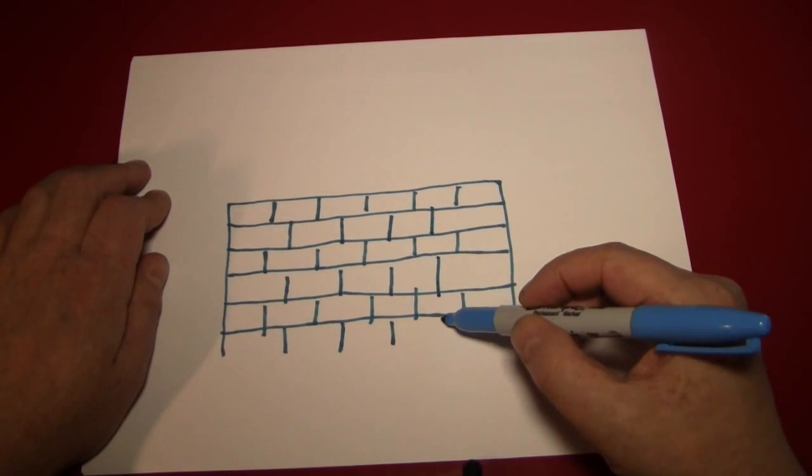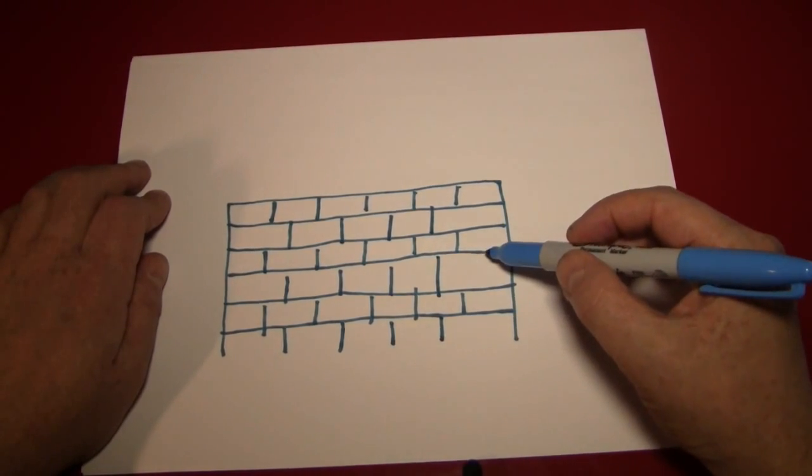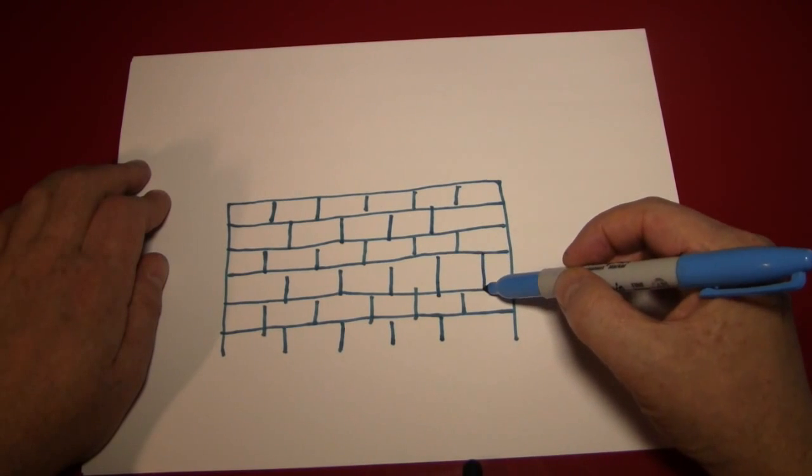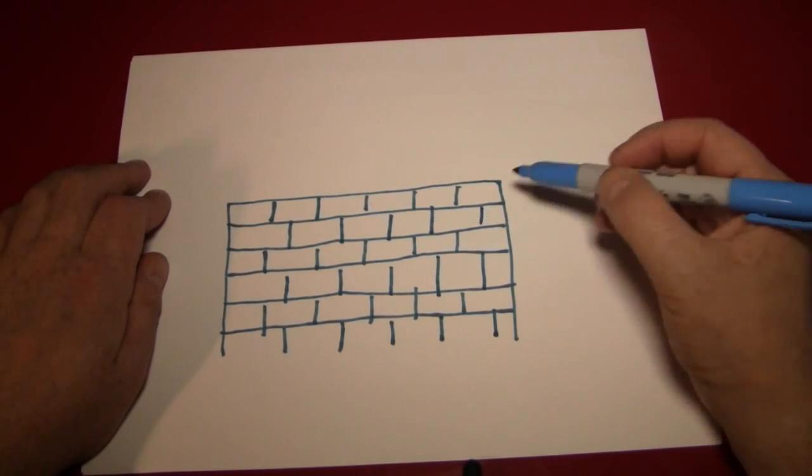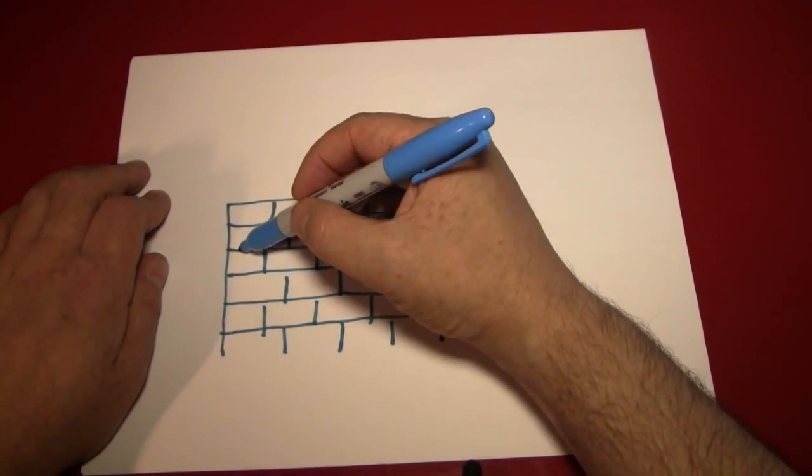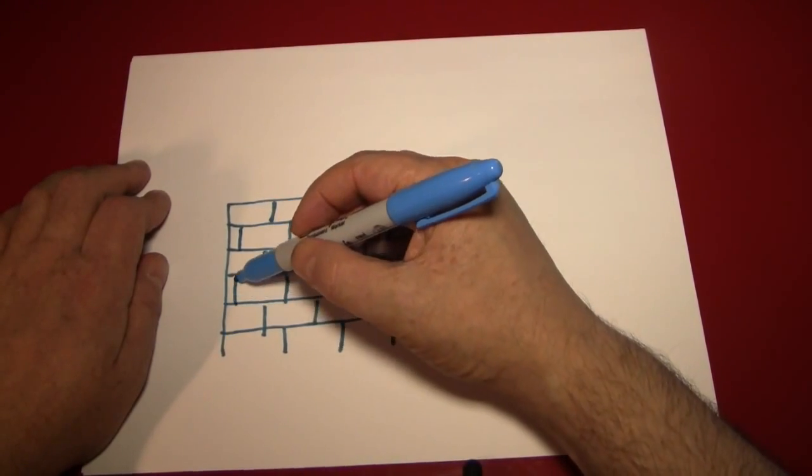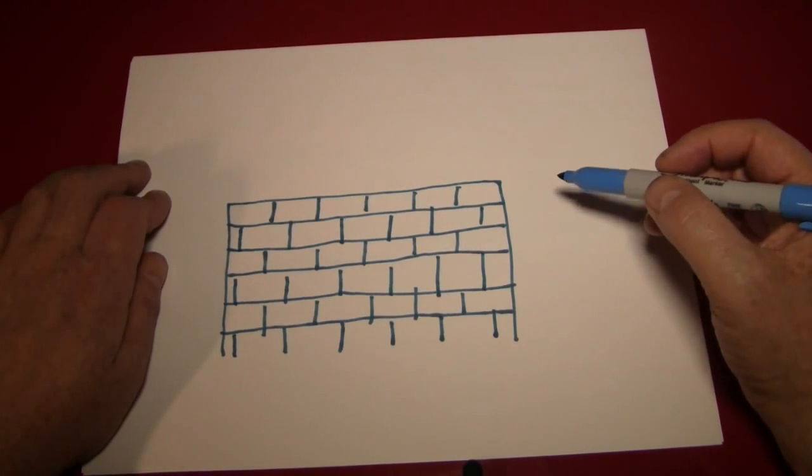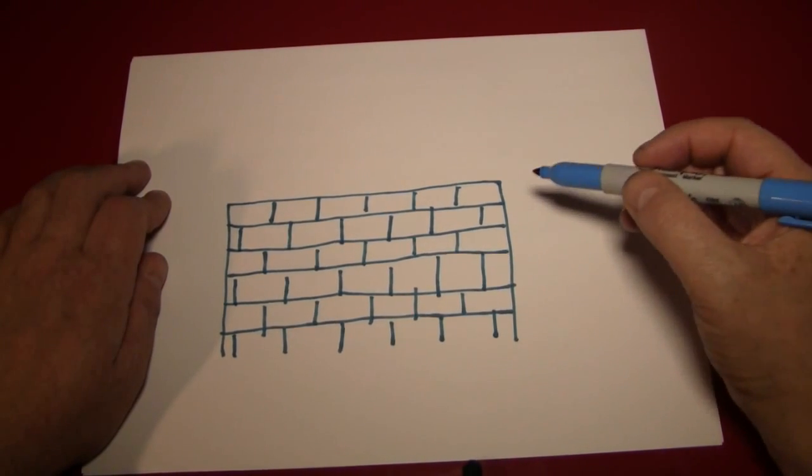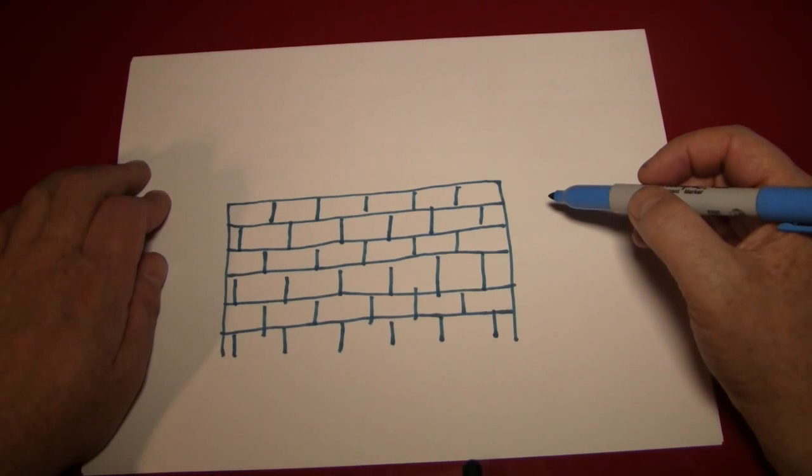Now remember to keep this pattern going. You can see how very uneven my rows are now that we've got everything down. Just realize, it's your wall, it's your bricks, they can be however you want.